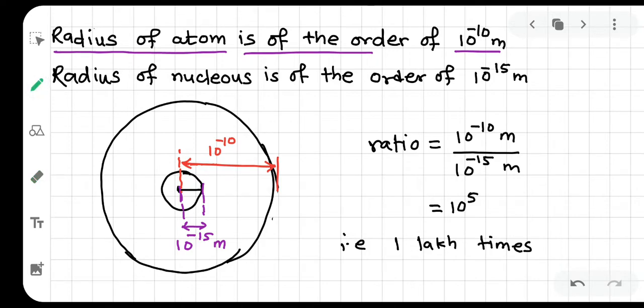We have seen that the radius of the nucleus is of the order of 10 to the power minus 15 meters. This is 10 to the power minus 10 meters, and that's 1 lakh times smaller.